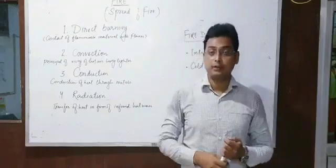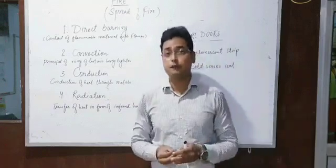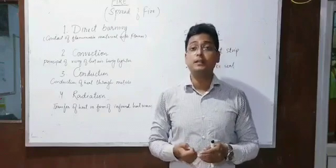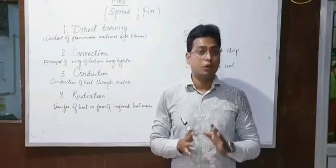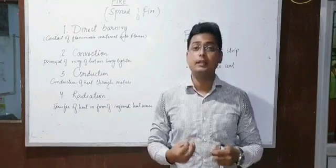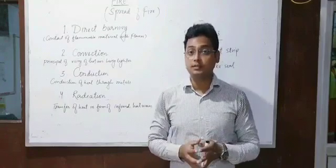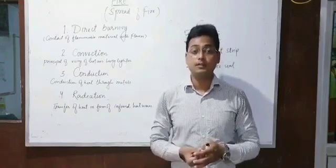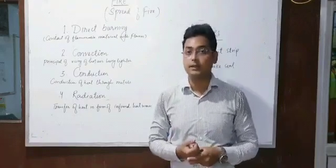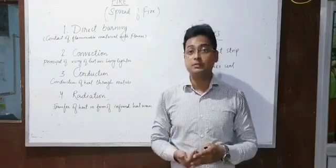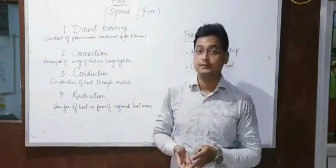The third method by which fire travels is conduction. This is based on the principle that metals are very good conductors of heat. Almost all metals are excellent conductors of heat. A simple example: the handles of most cooking utensils are made of bakelite, a kind of plastic, because the metal body of the utensil conducts heat so well that it would burn your hands if the handle were metal too.